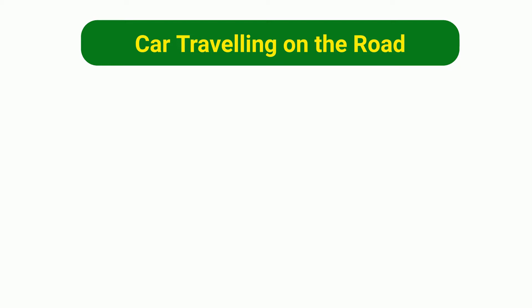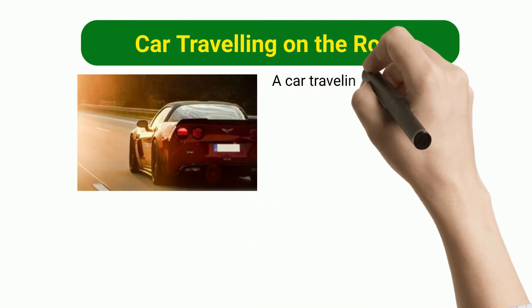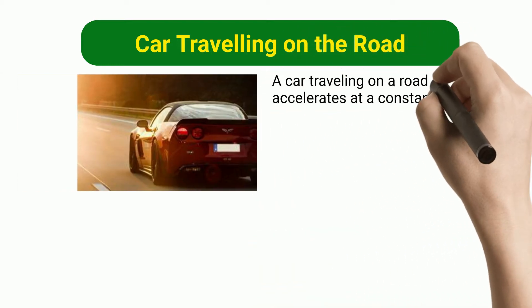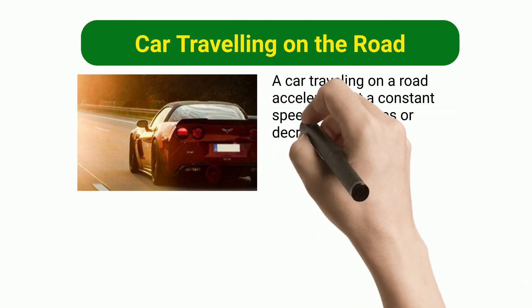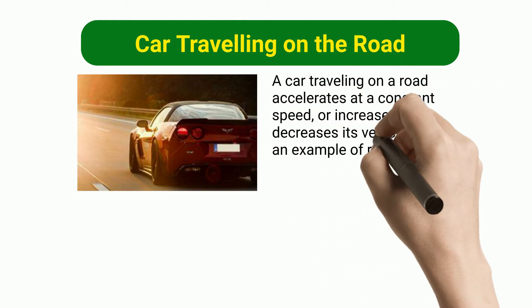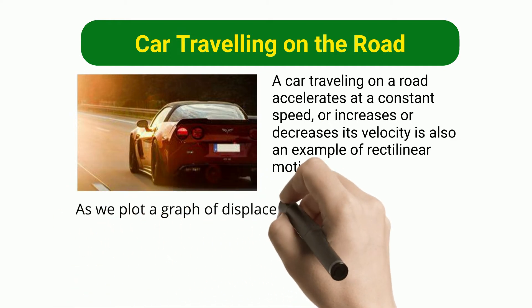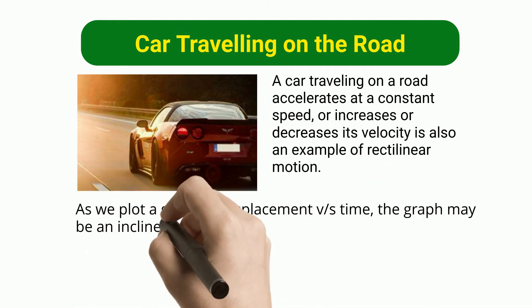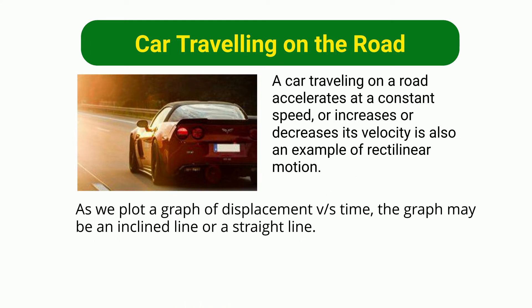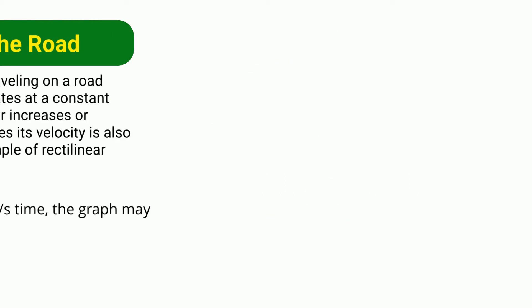Car traveling on the road: A car traveling on a road accelerates at a constant speed or increases or decreases its velocity, which is also an example of rectilinear motion. As we plot a graph of displacement versus time, the graph may be an inclined line or a straight line.